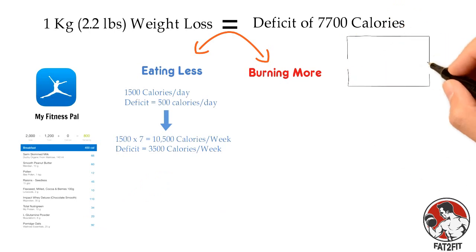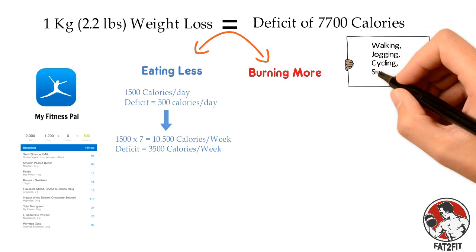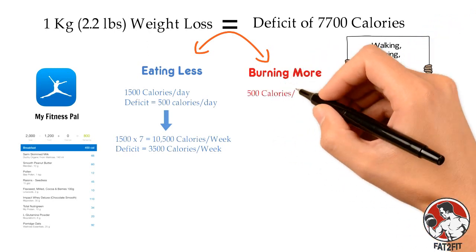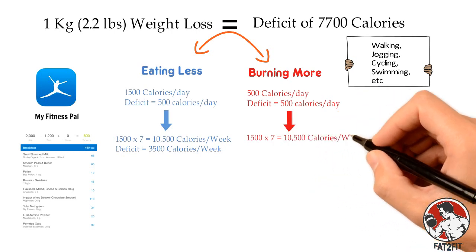In addition, if you increase physical activities by walking, jogging, cycling, swimming, etc., and burn an additional 500 calories per day, you'll accumulate another deficit of 3500 calories weekly.